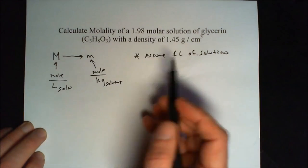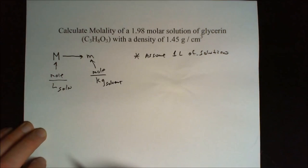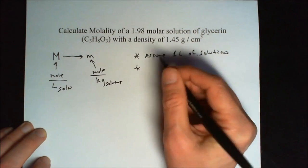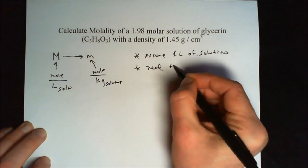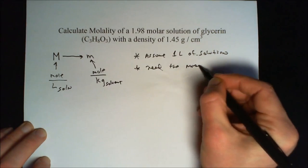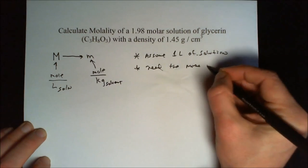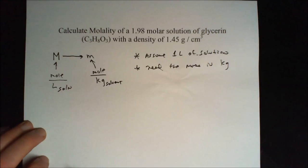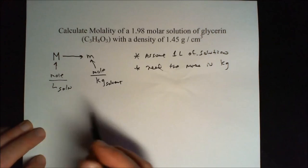So since we assume one liter of solution, we need to know what the mass of one liter of solution is. We need the mass in kilograms of that one liter of solution. So let's go ahead and get the mass of our solution first.